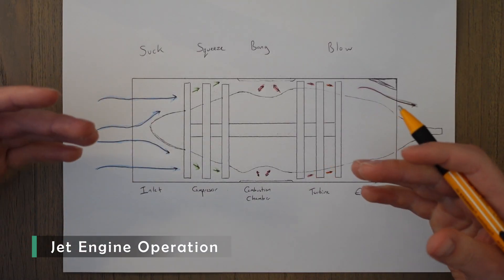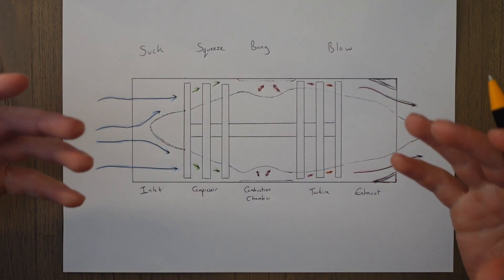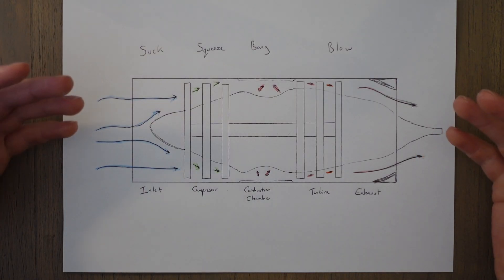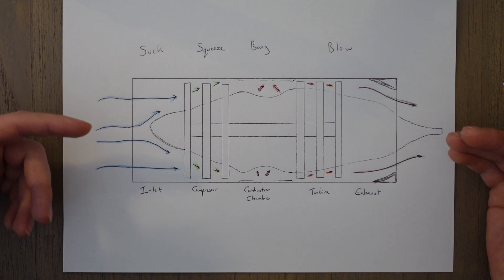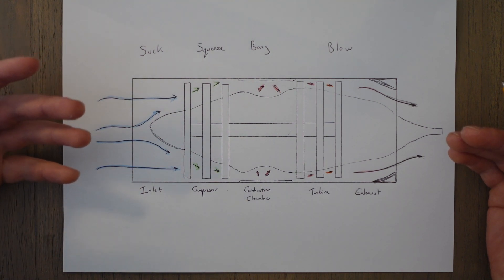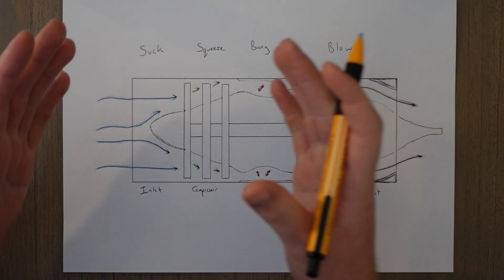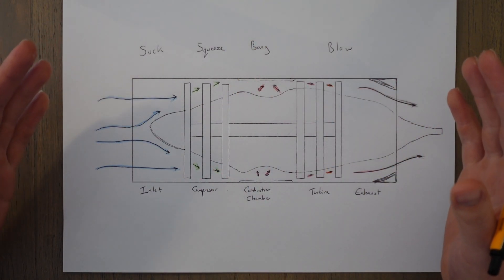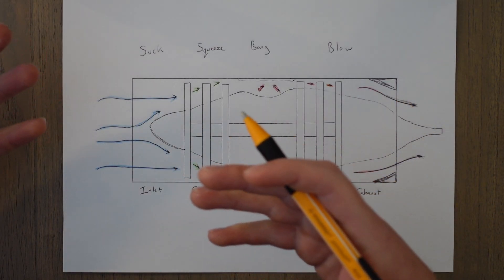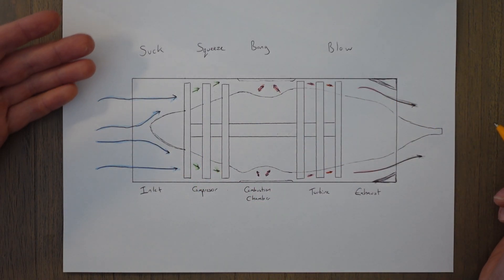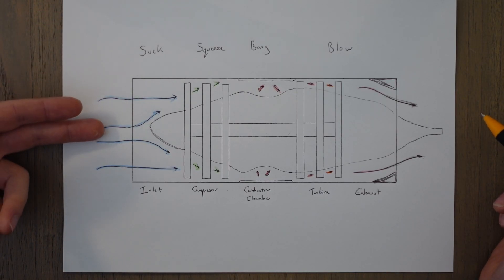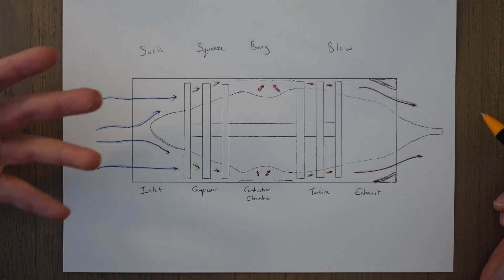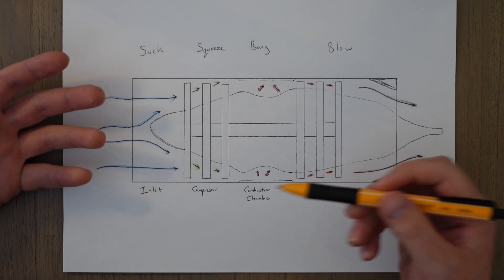A jet engine works essentially the same as a piston engine, except that the cycle of suck, squeeze, bang, blow is happening consistently and constantly. It's not broken up into different stages but into different sections of the engine instead. The first stage is the suck or inlet stage — air is sucked in at the intake at the same speed as the aircraft's forward speed.